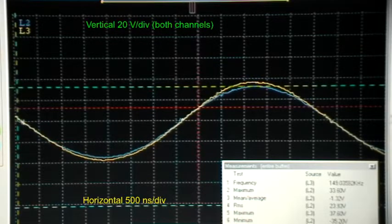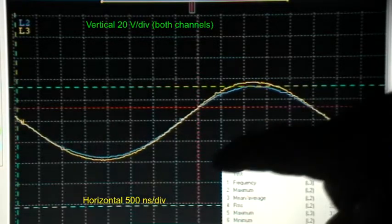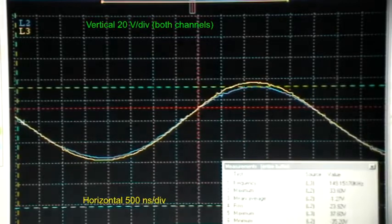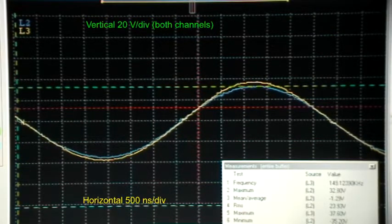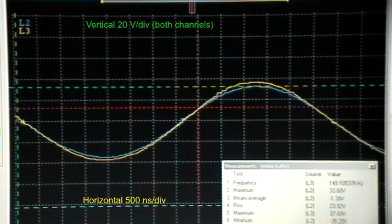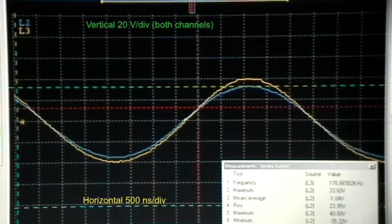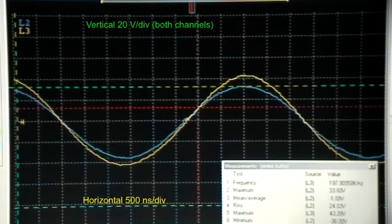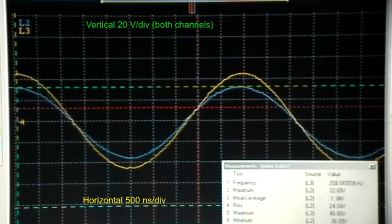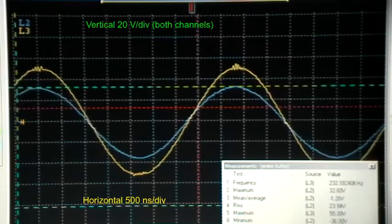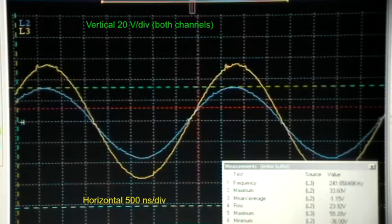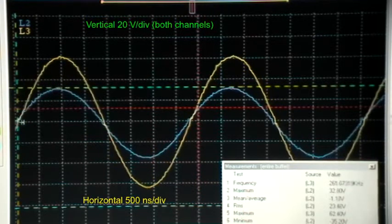Here we go. I'm giving it a signal of 15 volts peak-to-peak from the function generator, and right now both of these traces are displayed at 20 volts per division. So here we go, going higher and higher in frequency.